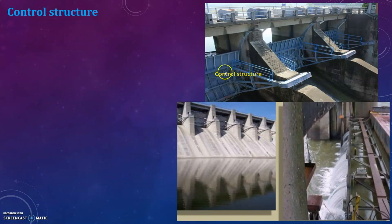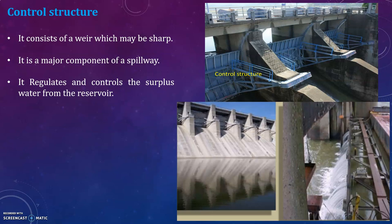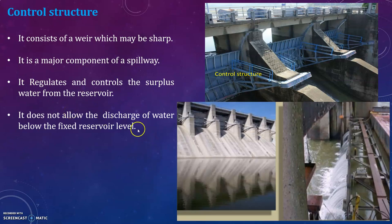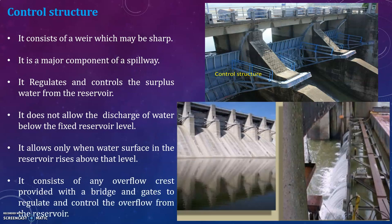The second component is the control structure. It is a major component of a spillway that regulates and controls the surplus water from the reservoir. It does not allow the discharge of water below the fixed reservoir level — it allows discharge only when the water surface in the reservoir rises above that level. It consists of an overflow crest provided with a bridge and gates to regulate and control the overflow from the reservoir.